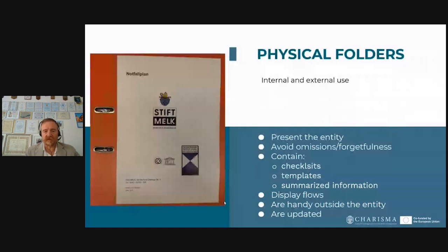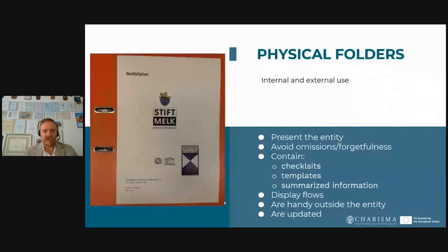What do they contain? Amongst others, they contain checklists, which are useful exactly for that — you make sure you are following point by point what you need to do. They contain templates where you can record information, and they give summarized information. They are not novels; they just need to give you the essence of the information you need to respond to different situations. They also display flows — flows of people, flows of information, flows of artifacts.